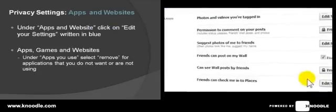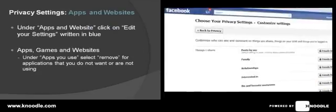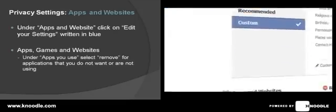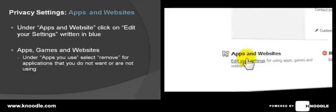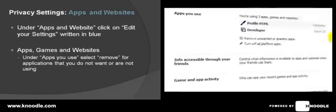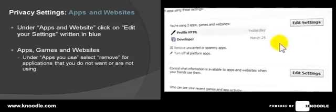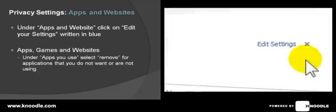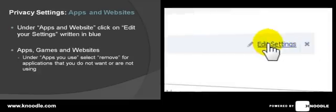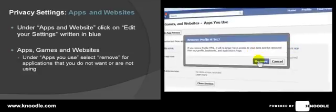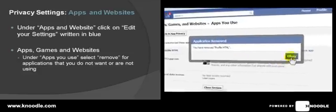Scroll back up to the top of the page and go back to 'Privacy' by clicking this button. Move down to the bottom of the page to 'Apps and Websites' and click 'Edit Your Settings.' Here you can delete any apps you don't need anymore. Click on 'Edit Settings' and either click on the cross or click 'Edit Settings' and then click 'Remove App.' It will come up with a warning — confirm the removal and click OK.